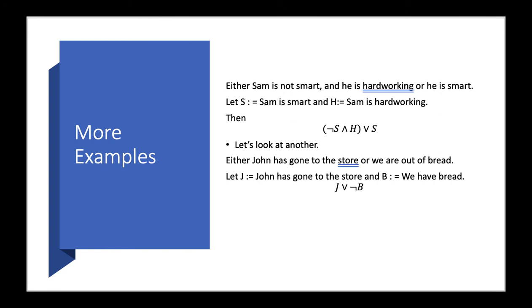So, let's look at some more examples of rewriting an expression using connective symbols. We have either Sam is not smart and he is hard working or he is smart. We'll let S be Sam is smart and H be Sam is hard working. Then we can write this as our statement. The parentheses is grouping the not smart, the not S, and hard working or S would be that Sam is actually smart.